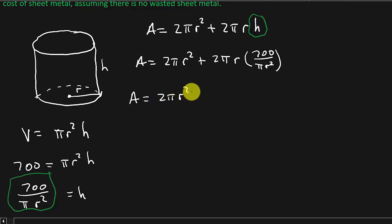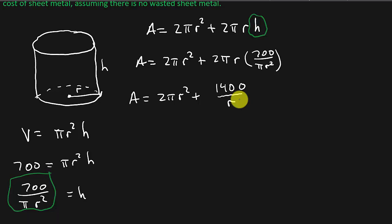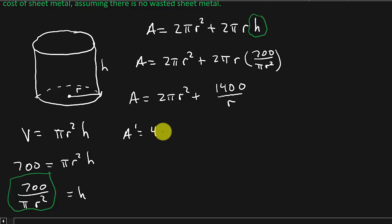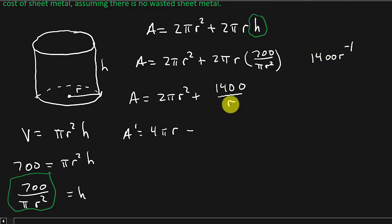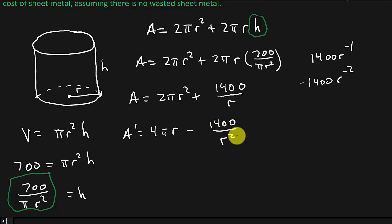We need everything in terms of one variable. The volume of a cylinder is pi R squared times H, and we're told the volume is 700, so 700 equals pi R squared H. Solving for H: H equals 700 over pi R squared. Substituting into the surface area formula: A equals 2 pi R squared plus 2 pi R times (700 over pi R squared). The pi's cancel and one R cancels, giving A equals 2 pi R squared plus 1400 over R.